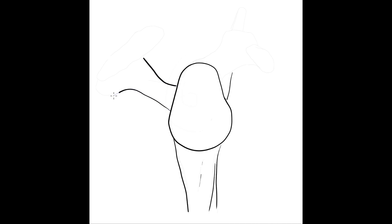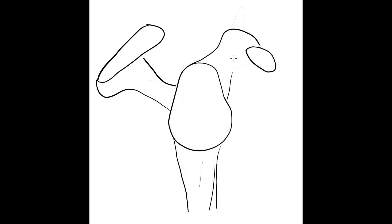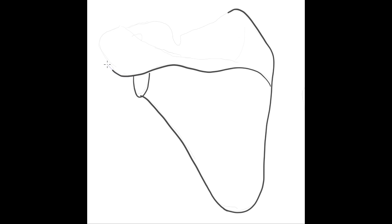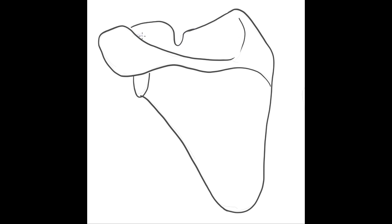We can also see the spinous process at the posterior surface of the scapula, and the coracoid process projecting anteriorly from the superior border. The most relevant posterior structure is the spinous process, which rises from the medial border and continues laterally, forming the acromion. The spinous process divides the scapula into two parts: the supraspinous fossa superiorly and the infraspinous fossa inferiorly. Medial to the coracoid process, on the superior border, is the suprascapular notch for the passage of the suprascapular nerve.